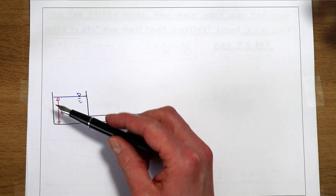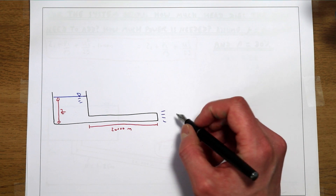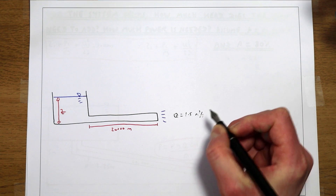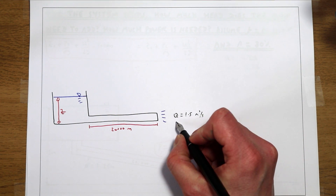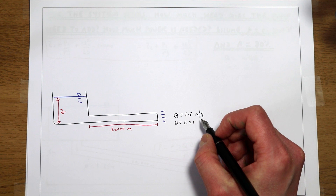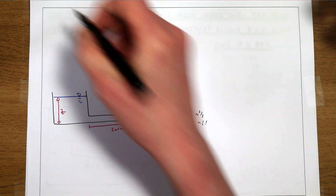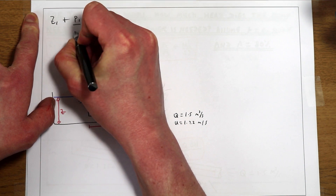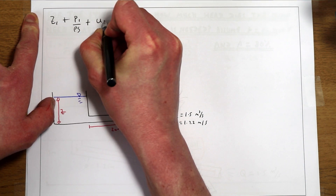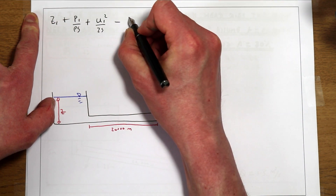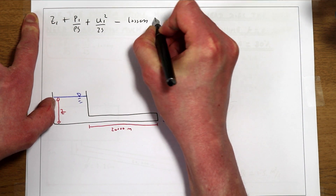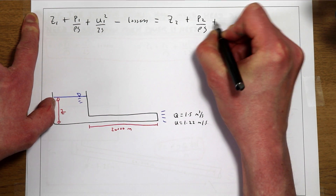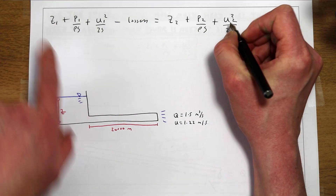To work out what elevation Z we'd need to achieve a flow of 1.5 m³/s — corresponding to a velocity of 1.22 m/s — we can apply Bernoulli's equation between two points: Z1 plus P1/ρg plus U1²/2g minus losses equals Z2 plus P2/ρg plus U2²/2g.